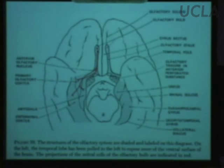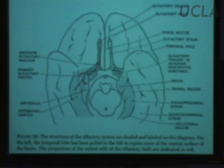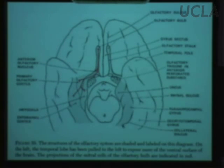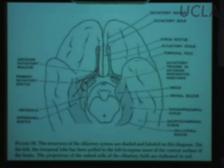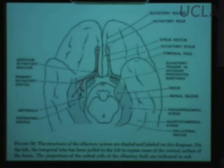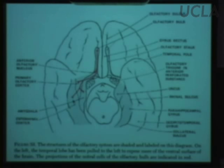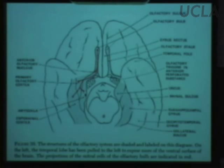The lateral olfactory stria or tract ends up synapsing in the piriform cortex, which the artist has stippled gray. On the other side, the artist has grabbed the piriform cortex — which in us is rolled medially relative to a sheep — and yanked it out laterally so you can see all its parts: the primary olfactory area, the entorhinal cortex, which gets some input, and also the amygdala.